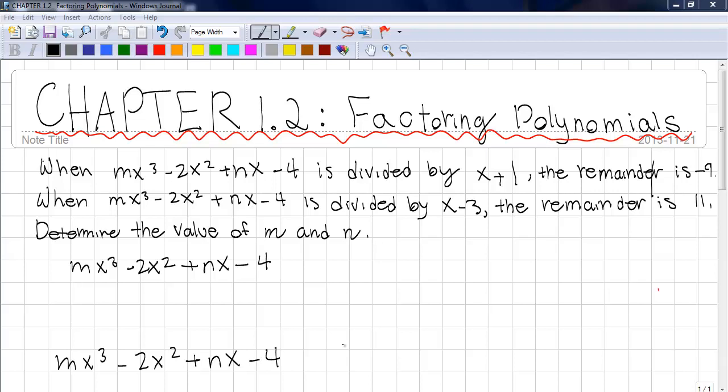So today we're going to be working on a question from chapter 1.2, Factoring Polynomials. When mx³ - 2x² + nx - 4 is divided by x+1, the remainder is -9. When mx³ - 2x² + nx - 4 is divided by x-3, the remainder is 11. Determine the value of m and n.